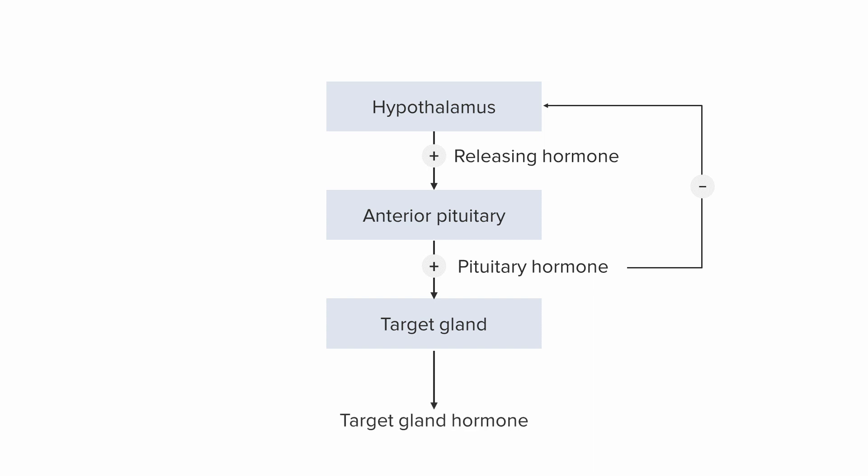The target gland itself can go on and do whatever it needs to do — for example, the thyroid gland would be making more hormones. That can also help turn off stimulation in the anterior pituitary and hypothalamus through feedback. As there's more target gland hormone, such as thyroid hormone, it would be sensed by the pituitary and hypothalamus as being sufficient and turn off the stimulating hormones, maintaining homeostasis.